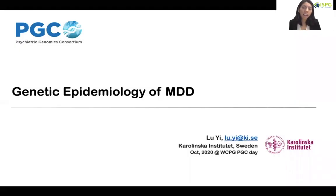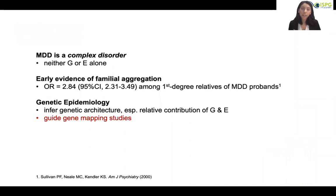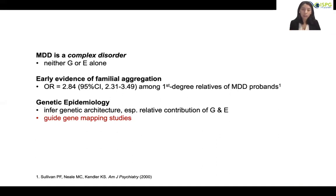Hi everyone, this is Lu Yi. Today I'm going to talk about the genetic epidemiology of MDD. It is really clear that MDD is a complex disorder, so neither genes nor environment plays a role alone. Early evidence suggested that MDD runs in families, with increased risk in first-degree relatives of MDD patients compared to controls. But how much is attributable to genes and environment respectively? The answer will guide our current gene mapping effort.